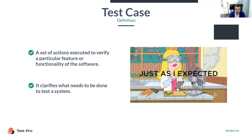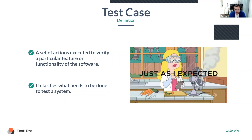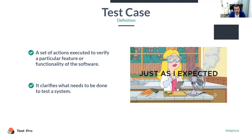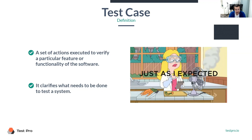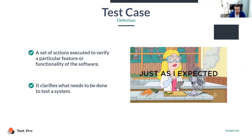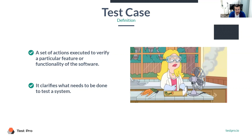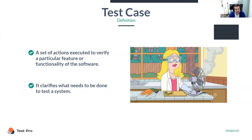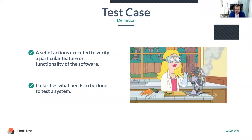The second test case could be the color of that cup. The next one could be the material it's made of. The fourth one could be: is it capable of holding hot water, or is it only for cold water? So you can actually come up with quite a few test cases just for something very simple.